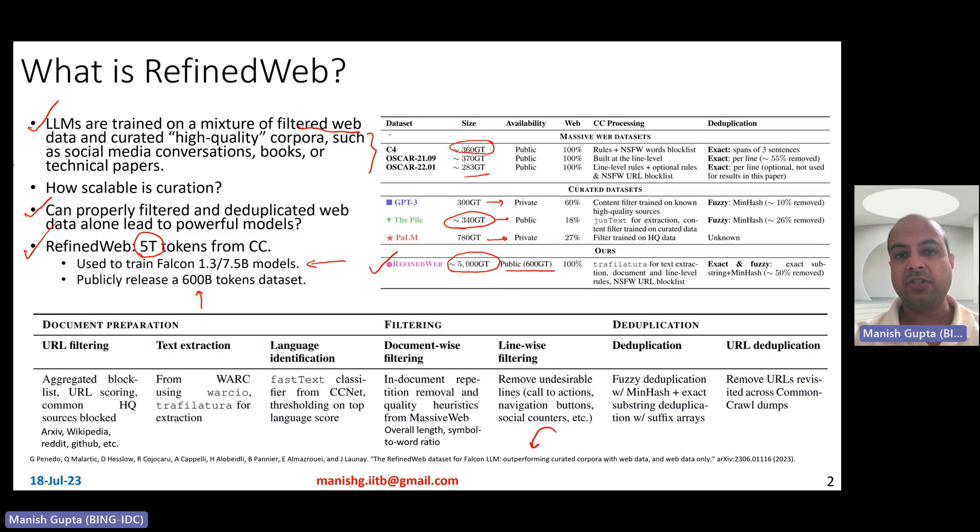The first block basically was just about web datasets. These three datasets are essentially curated datasets, which basically means that the filtered web part basically comprises only, let's say 18 percent of the pile. The remaining part is actually curated. On the other hand, RefinedWeb is 100 percent web dataset, no curation at all. All of these datasets basically have been obtained by doing some pre-processing on common crawl and then deduplication as well. Different datasets follow different kinds of pre-processing and deduplication mechanisms. For example, PALM model is trained on high quality data and how did they do deduplication is unknown. It didn't really mention in the paper. Similarly, many other datasets have been pre-processed using some rules or some block lists and so on.